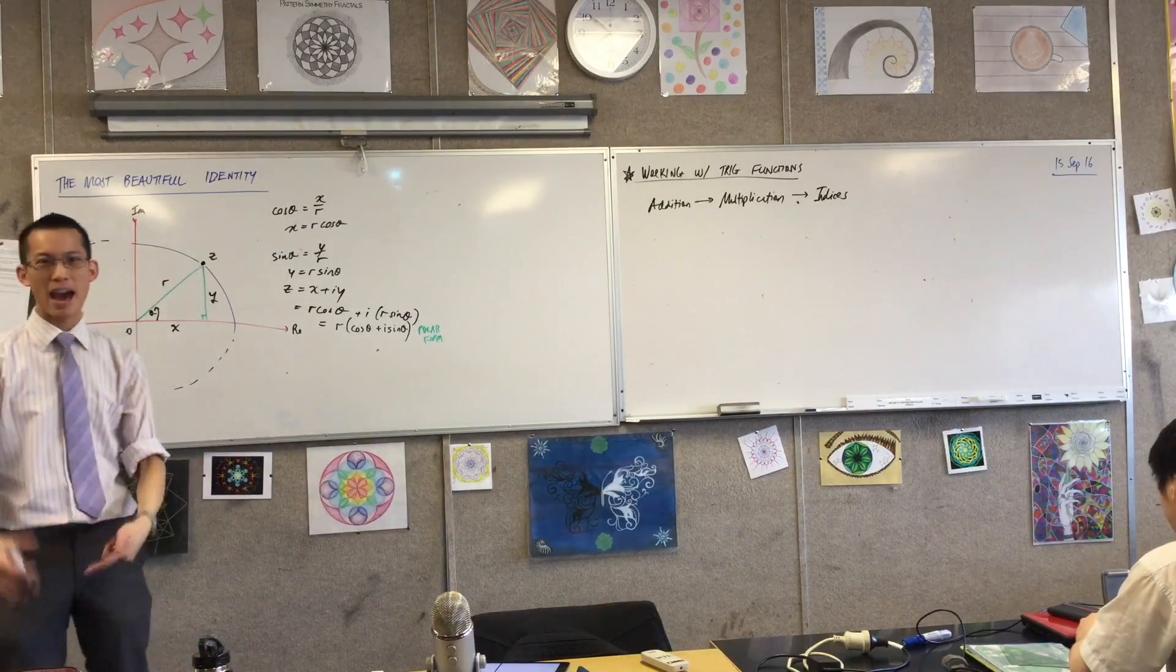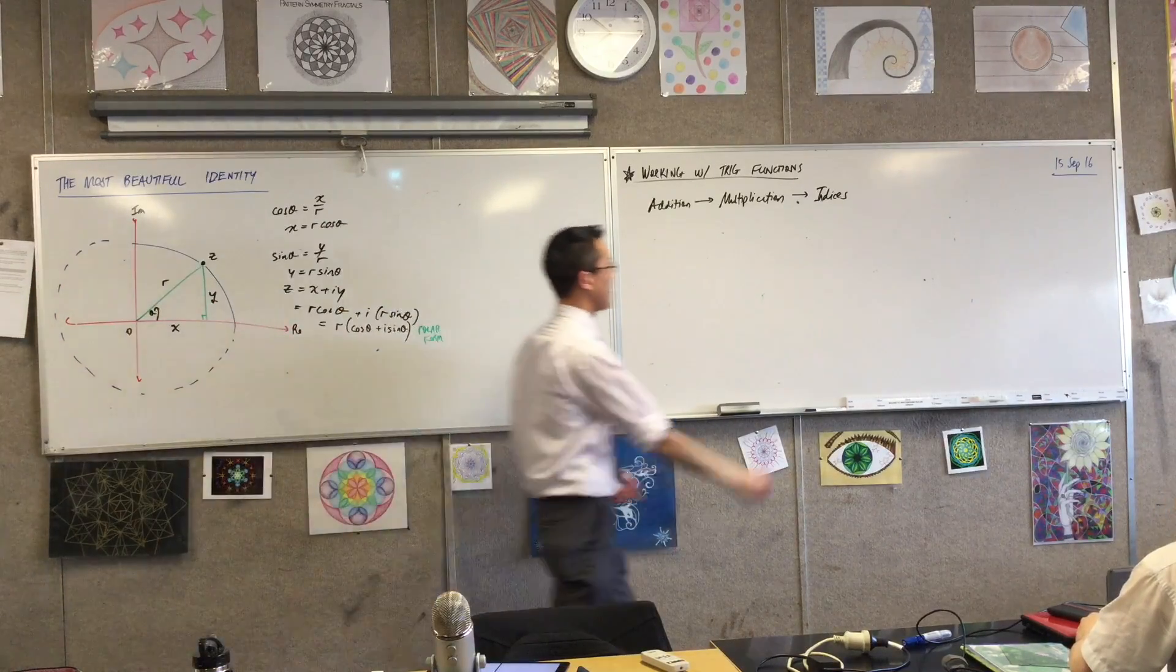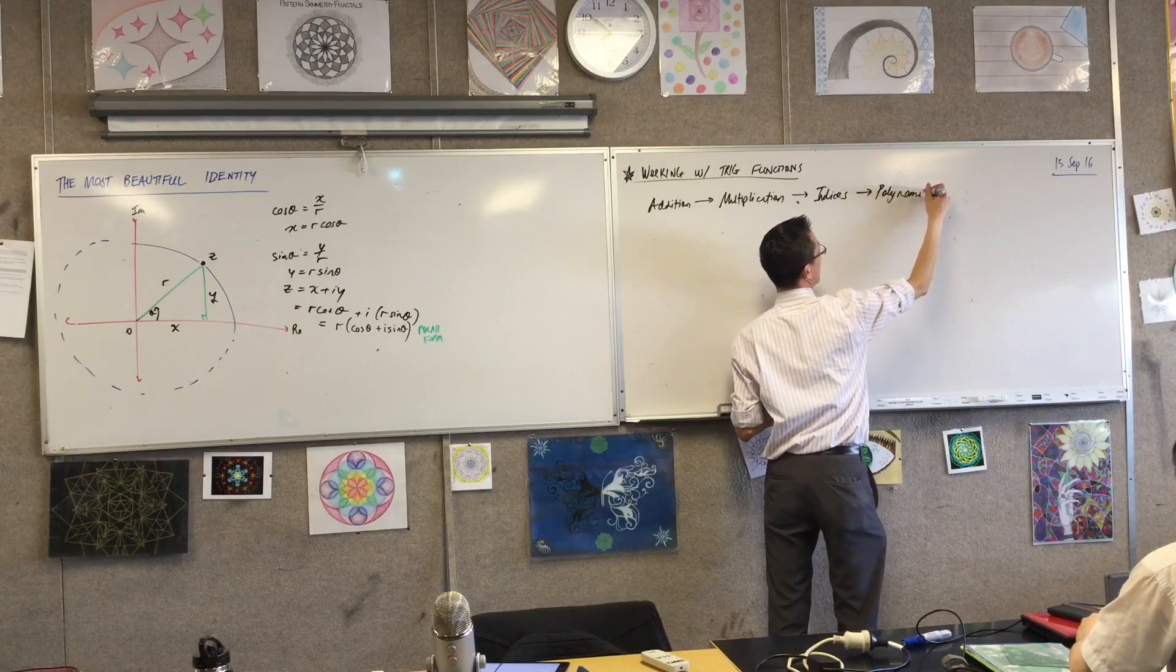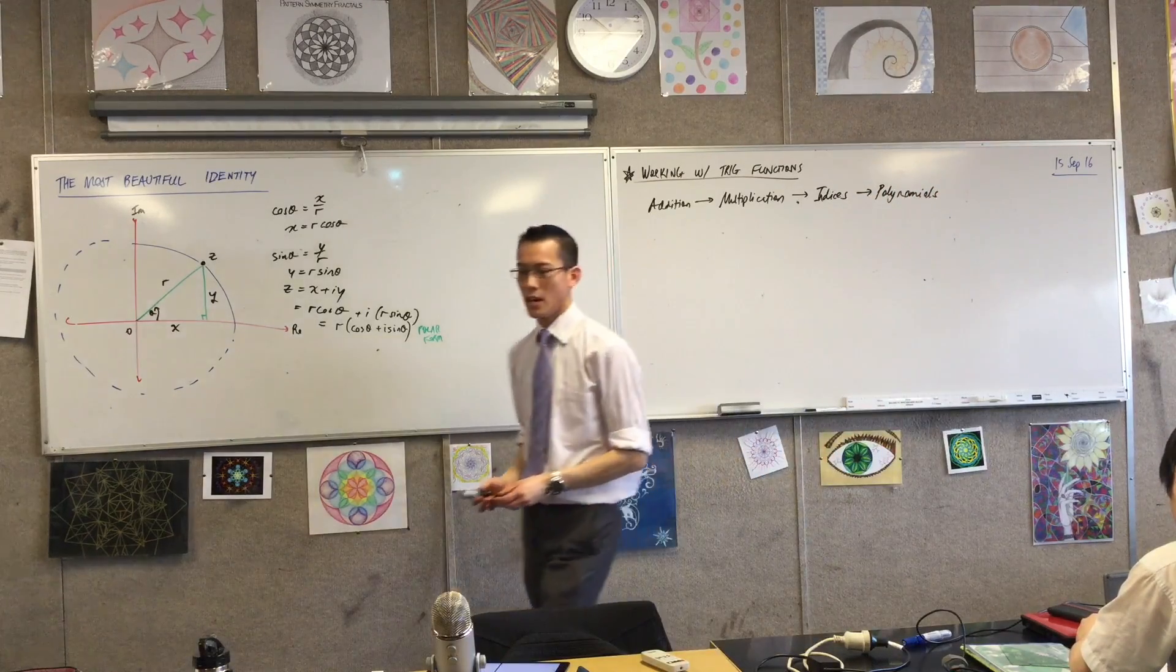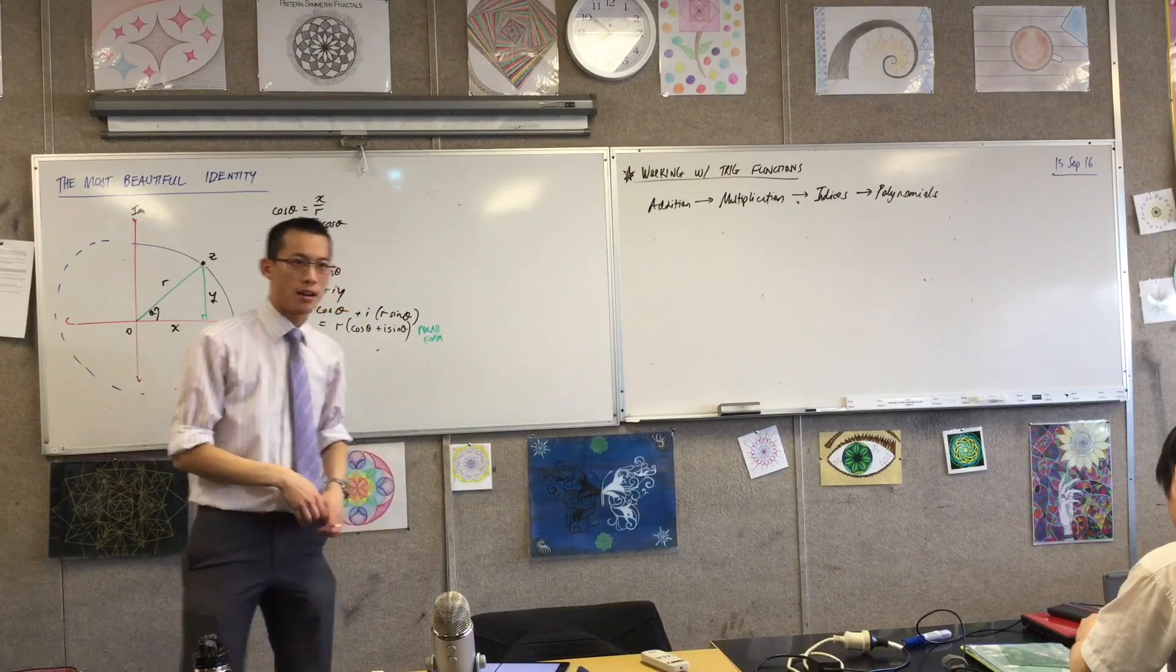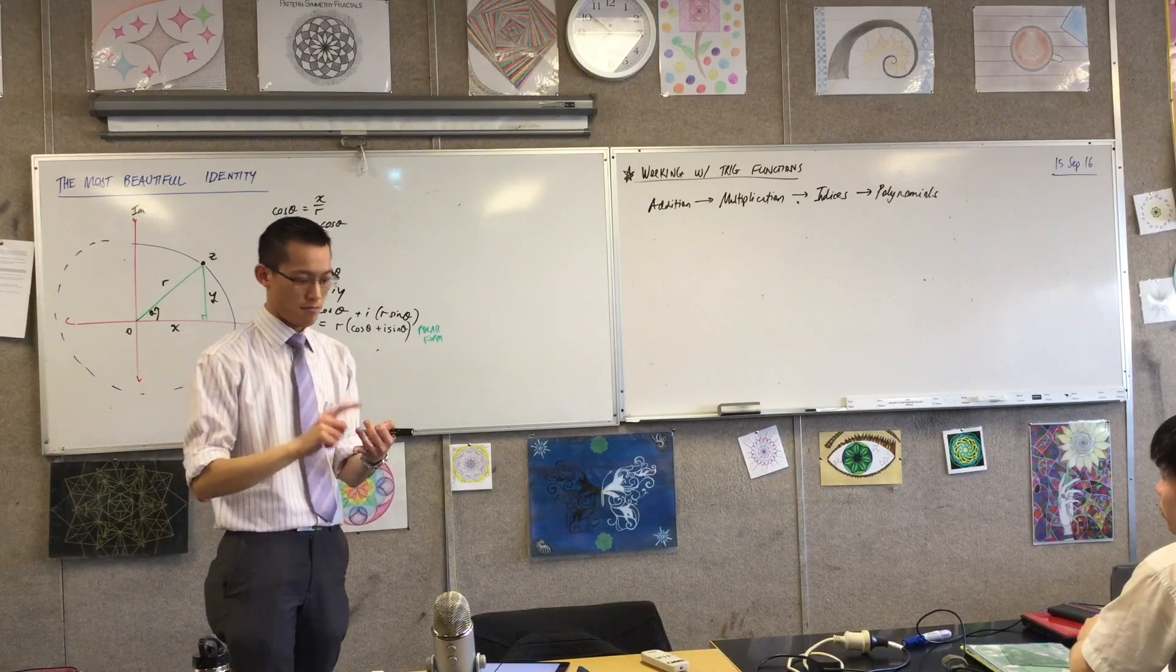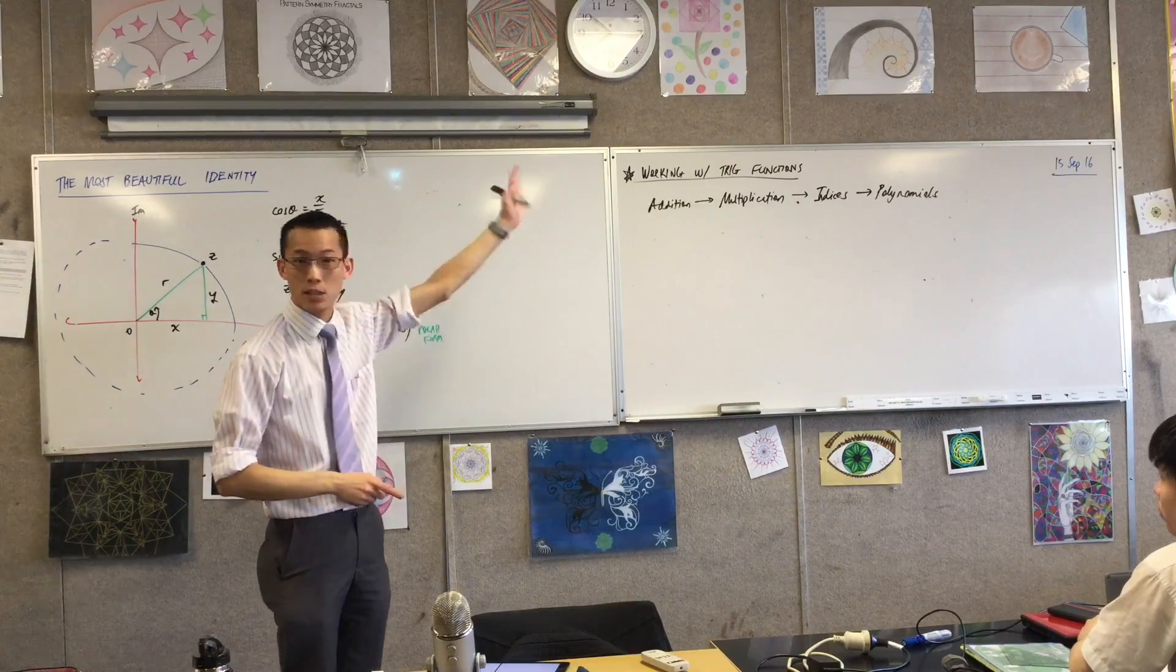Now, once you develop this idea of powers and exponents, where that goes, I know it seems a bit of a leap, but we have all the pieces we need, then you've got polynomials. Because think about what polynomials are. The x is just a number, and you're combining them by adding, subtracting, multiplying, dividing, and indices. It's all you need.